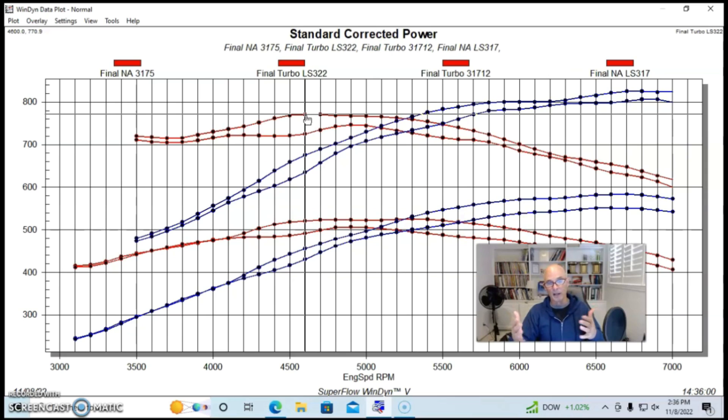This shows you that the rec port heads, not only do they make more power than the cathedral port heads, they would also make more power than the 243 or any of the factory LS or cathedral port heads. Anything that you run that makes more power NA is definitely going to add more power under boost.